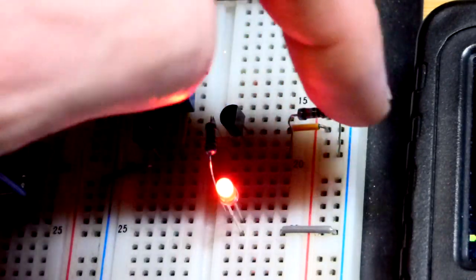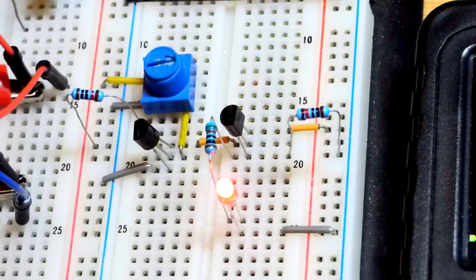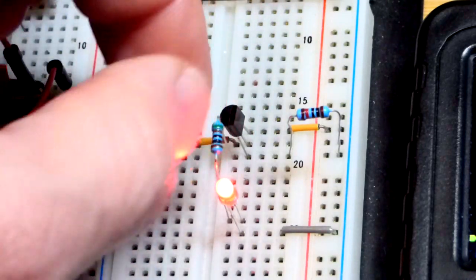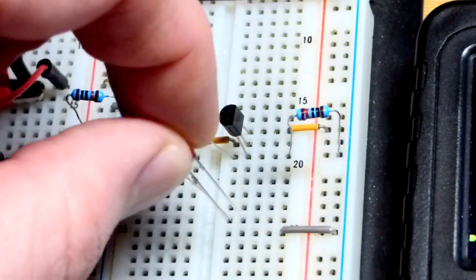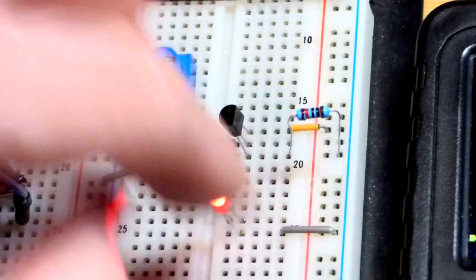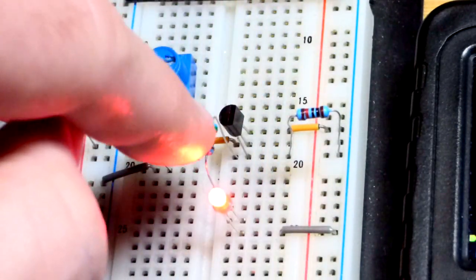And the emitter there is to the 10 kilo ohm resistor going to ground. The emitter is also connected to the current setting resistor, that's protecting the LED. Long lead the anode to the resistor, short lead the cathode down here. It's a 510 ohm resistor.